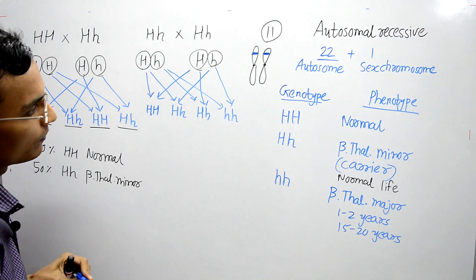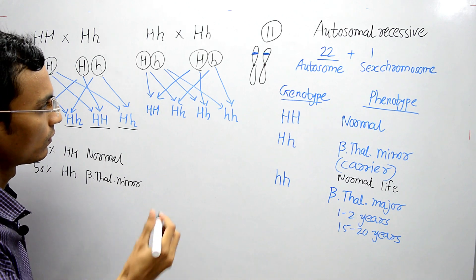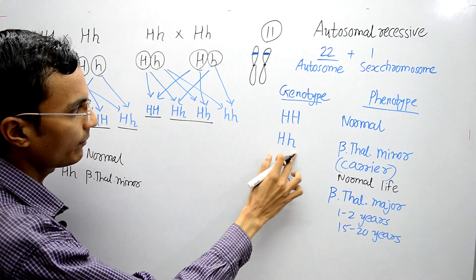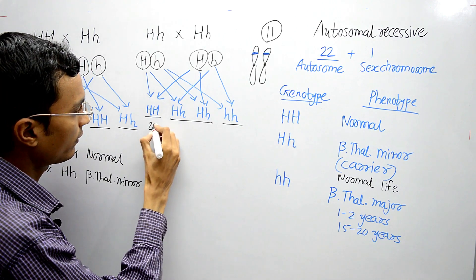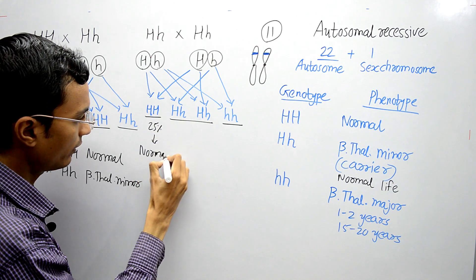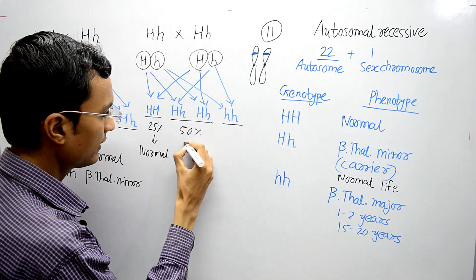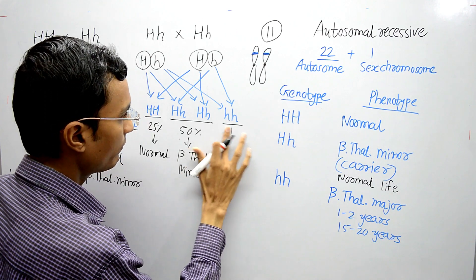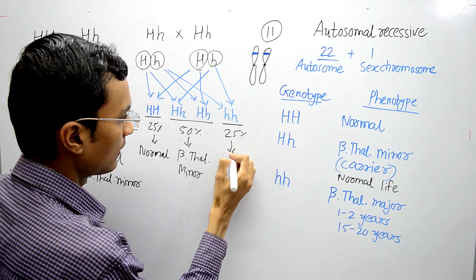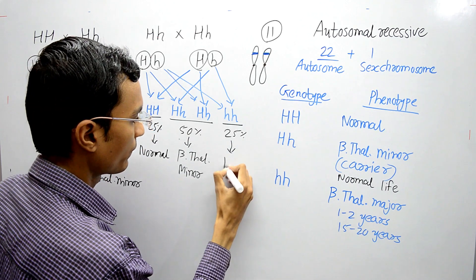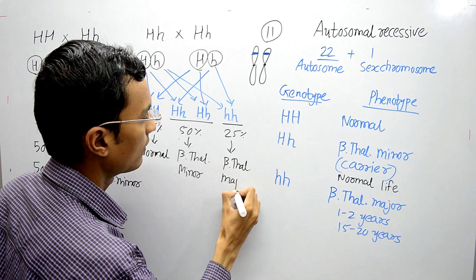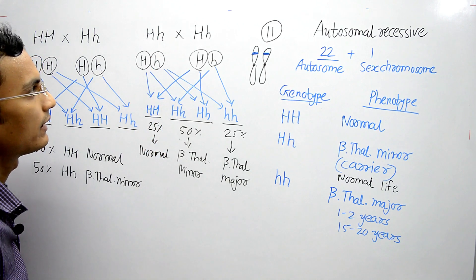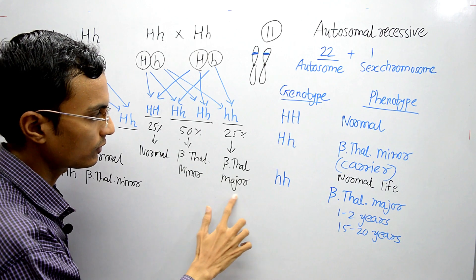Looking at the offspring: one is capital H capital H (normal), two are capital H small h (beta thalassemia minor), and one is small h small h (beta thalassemia major). So the ratio is 25% normal, 50% beta thalassemia minor, and 25% beta thalassemia major. If both partners are beta thalassemia minor, there is a 25% chance they will produce a beta thalassemia major child.